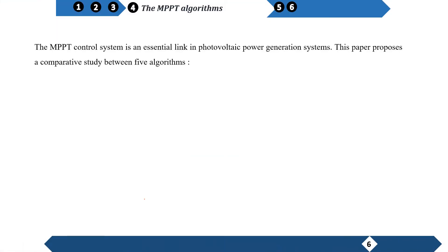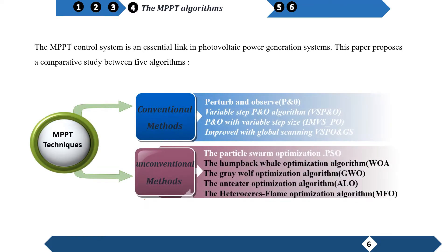The NPPT control system is an essential link in a photovoltaic power generation system. This paper proposes a comparative study between five conventional and unconventional algorithms.